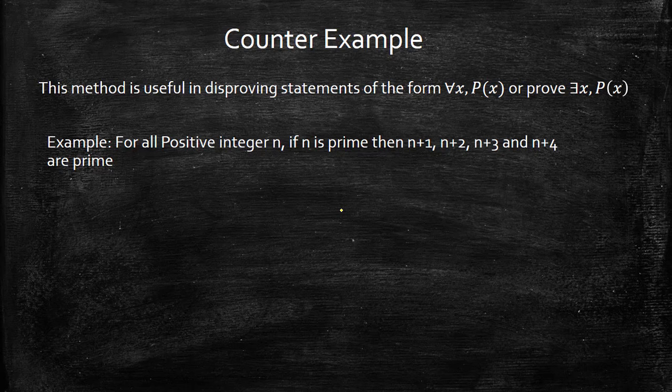Here we have an example: for all positive integer n, if n is prime, then n+1, n+2, n+3, and n+4 are prime.